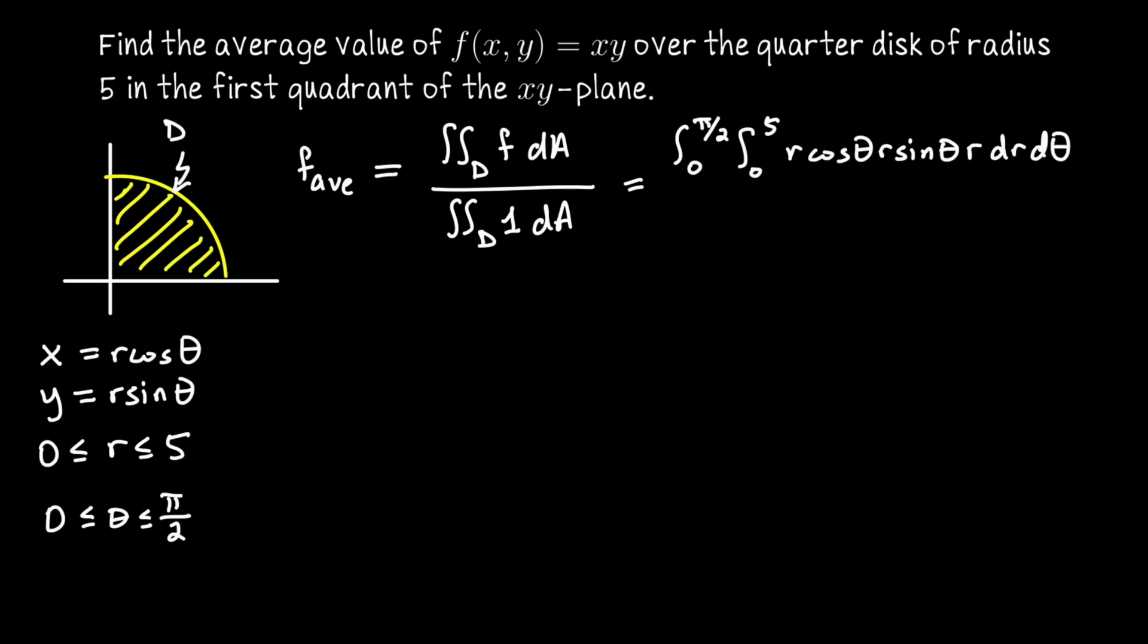I will also convert the denominator, but it's not really necessary because I know from geometry what the area of the domain is. Let me just write it down, though, that this would be integrating from 0 to pi over 2, 0 to 5, 1 r dr d theta. So I'll write r dr d theta.